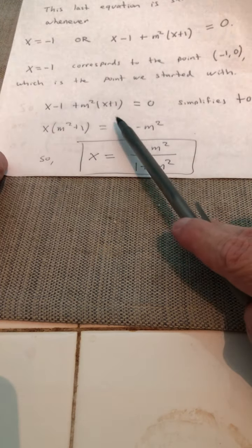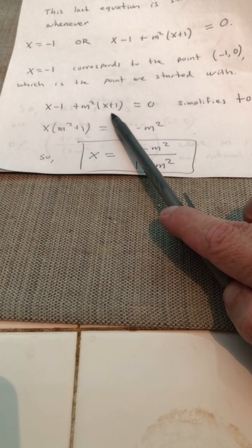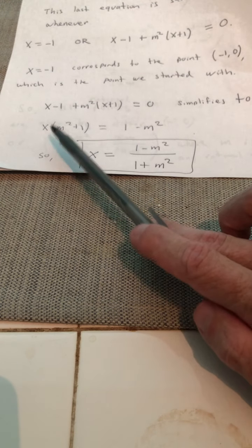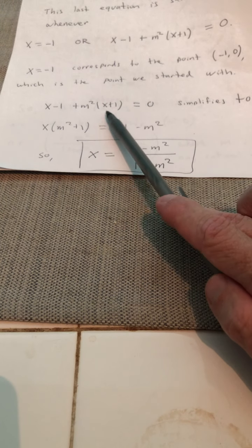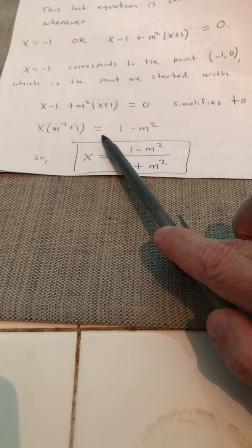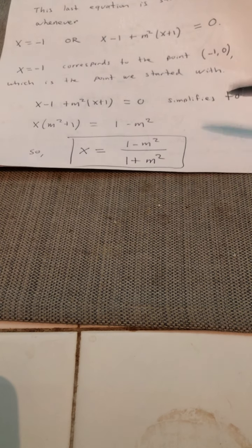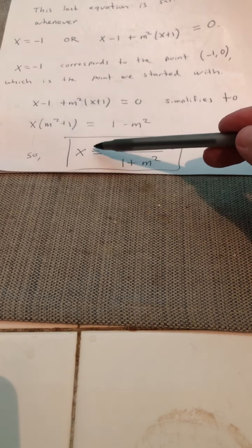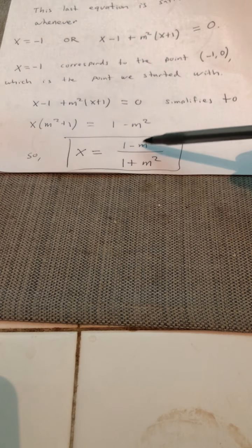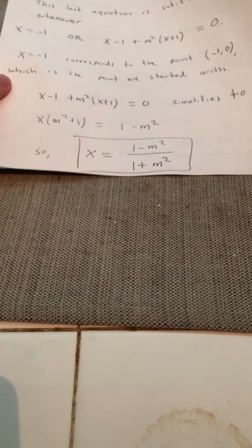So I want to solve now x minus one plus m squared times the quantity x plus one equals zero. So what we'll do is we'll get all the terms involving x on one side. What we have in the left-hand side ends up being x times the quantity m squared plus one. And the right-hand side is going to be one minus m squared. So solving for x, we get x equals one minus m squared over one plus m squared, where m is any rational number.